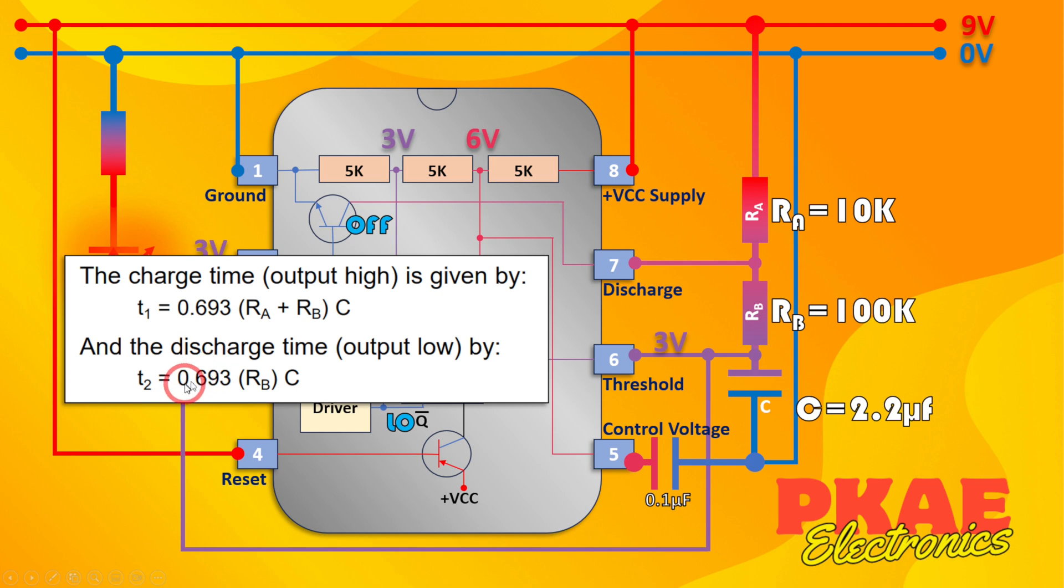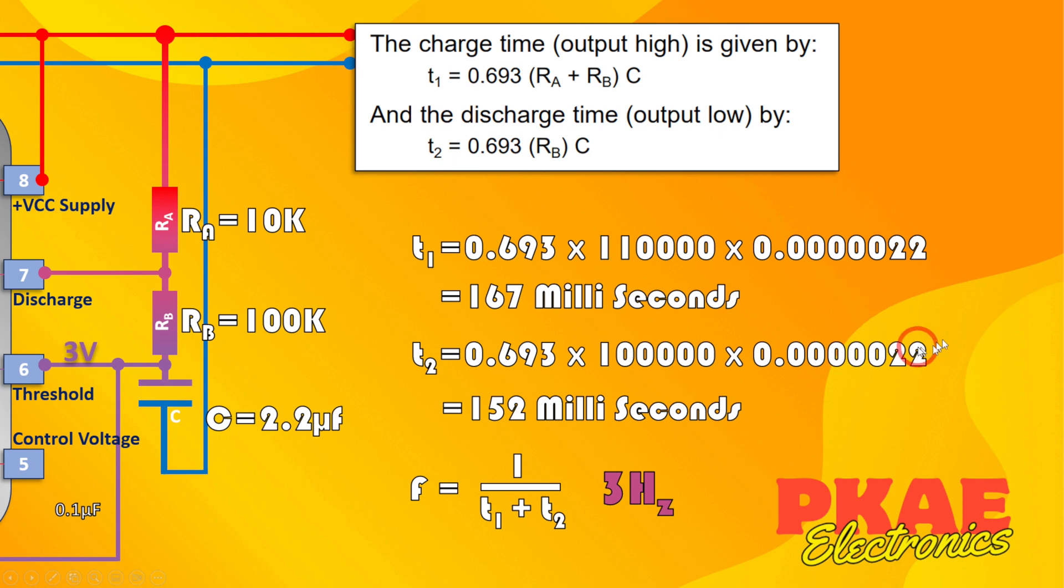Now the discharge time, T2, is equal to 0.693 times RB. In this instance it only discharges through that resistor, it doesn't pass through this one, times the capacitance again. The equations came out as I show there, so our on time was 167 milliseconds and the off was 152, and that's what we achieved on the oscilloscope when we measured it. I also calculated that it roughly came out to 3 hertz.